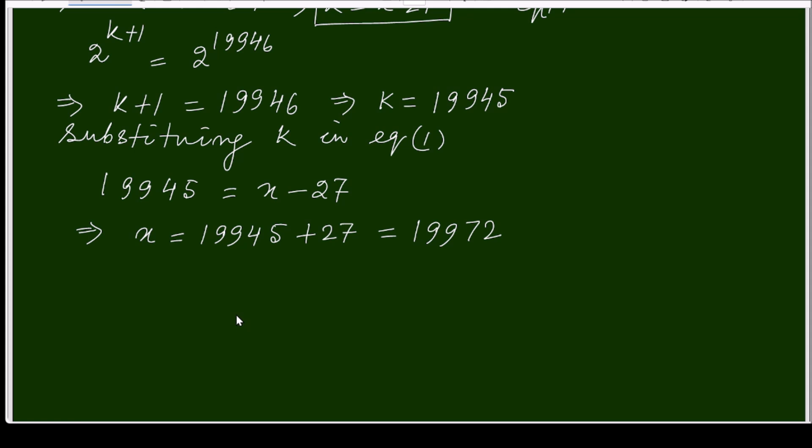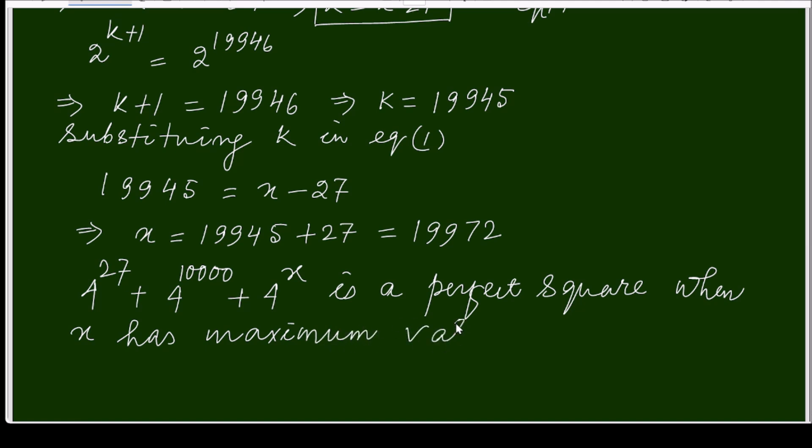Writing the answer statement: 4^27 + 4^10000 + 4^x is a perfect square when x has maximum value 19972.